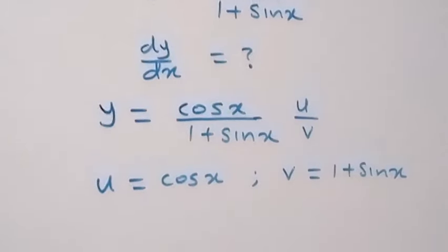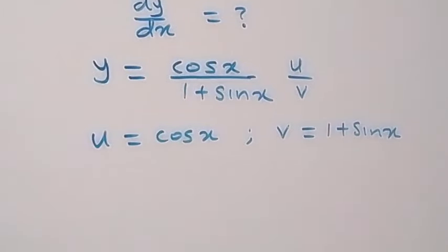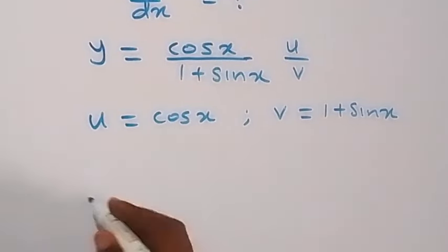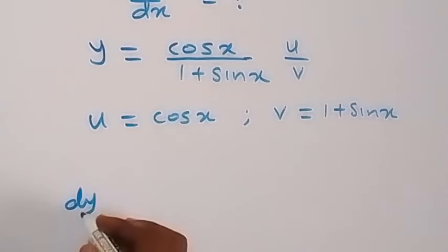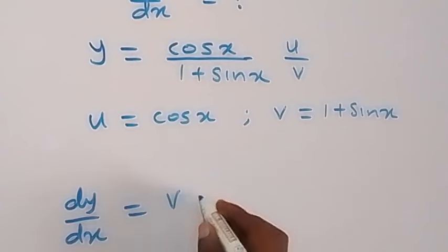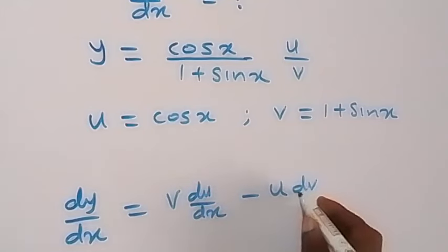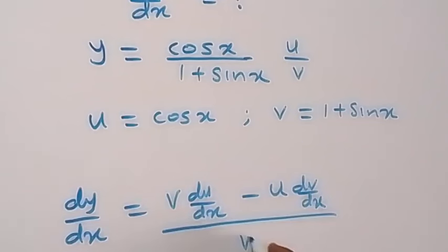When we have quotient form like this, the derivative of y with respect to x, which is dy/dx, from the formula gives us v du/dx minus u dv/dx over v squared.